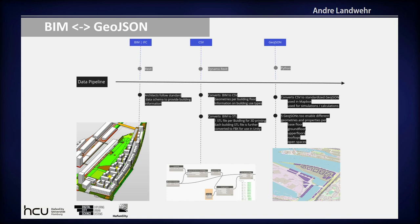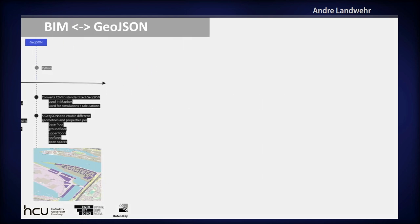which allows you to iterate over each building and each floor and read the properties of those floors and geometries. We then exported them via IFC, read that with Python to generate five standardized GeoJSON files, one for each floor typology — such as basement floors, upper floors, ground floors, rooftops, and also the open spaces.